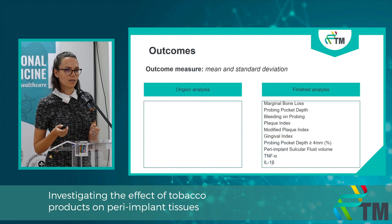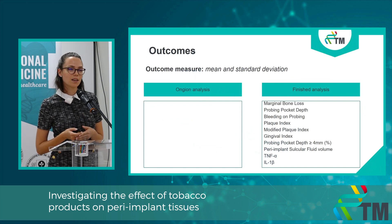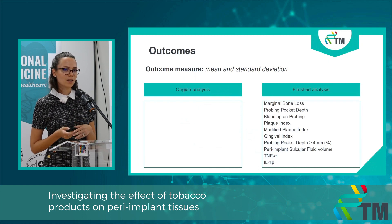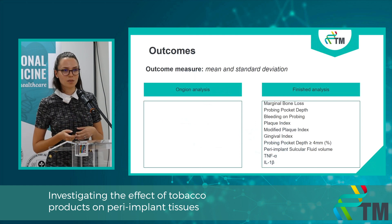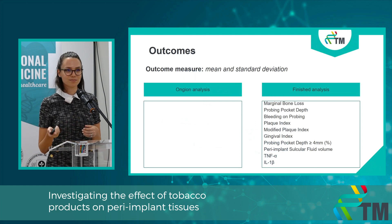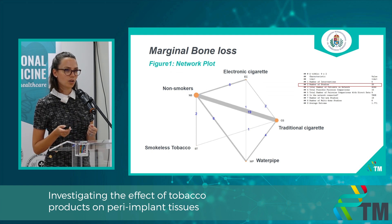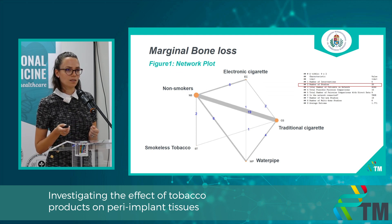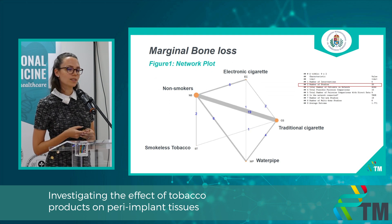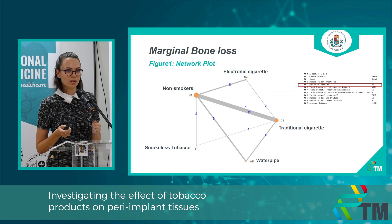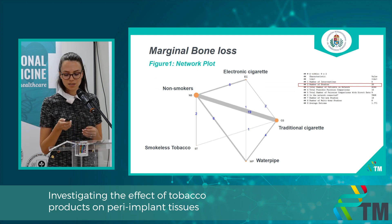Here you can see our outcomes. We have finished all of our analyses. The outcome measure was mean and standard deviation in all of our outcomes. Because of the shortage of time, I will only present the first two. The primary outcome was marginal bone loss measured in millimeters. You can see the network plot, where the nodes represent the different kinds of tobacco products and the lines — the network edges — represent the direct comparisons between them. We included 25 eligible articles in this analysis.